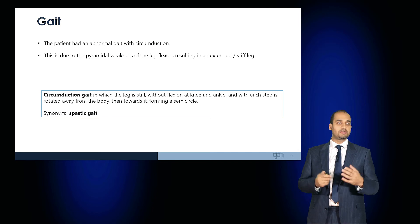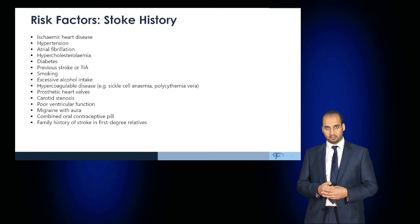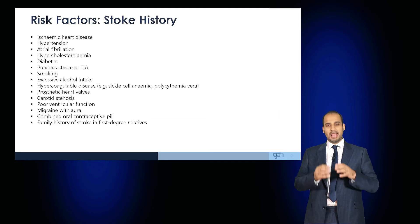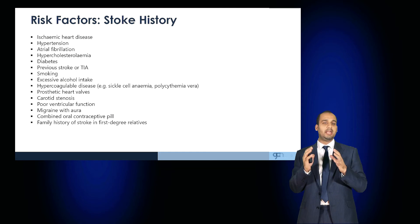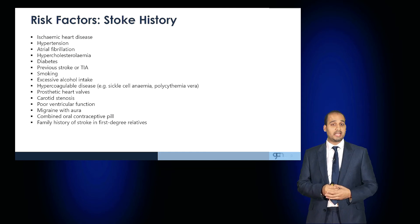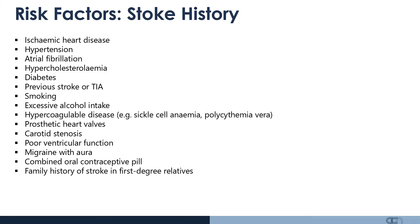Risk factors for stroke include heart disease, ischemia, hypertension, atrial fibrillation, and any vasculopathic features. Smoking, a previous TIA, excessive alcohol intake, a hypercoagulable state, carotid stenosis, and poor ventricular function also increase risk. Drugs such as the combined oral contraceptive pill, or a family history of stroke, all increase the risk of developing a stroke.